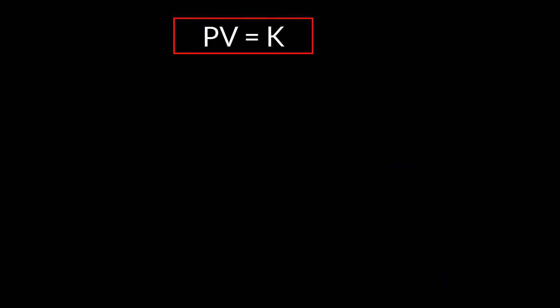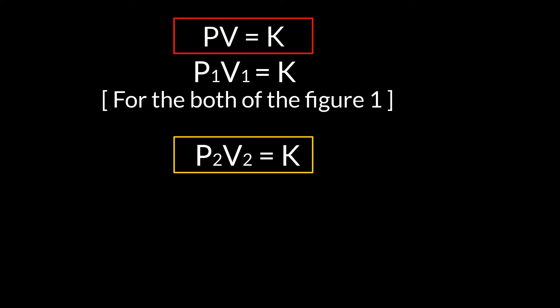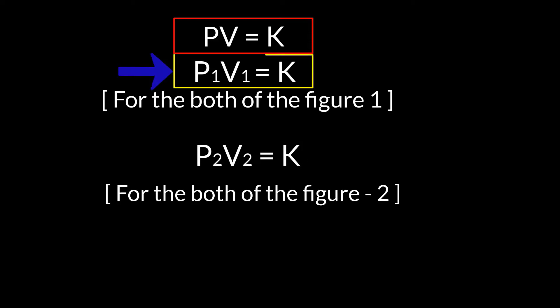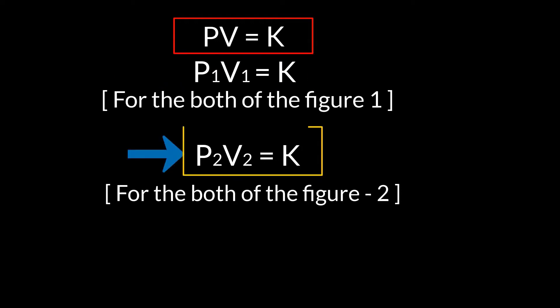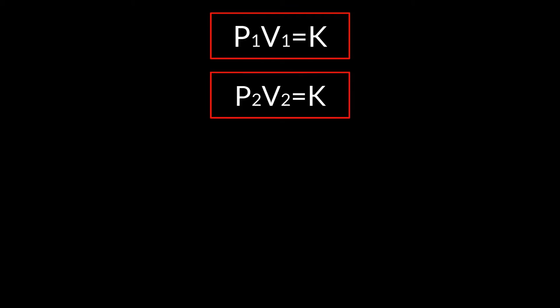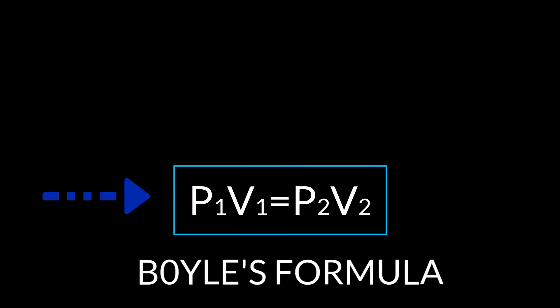Now, we can write P1 V1 equals K for both figure 1 cases, and P2 V2 equals K for both figure 2 cases. P1 V1 equals K is for the initial stage, and P2 V2 equals K is for the changed stage. As P1 V1 equals K and also P2 V2 equals K, certainly we can write P1 V1 equals P2 V2. And this is the formula for Boyle's law.